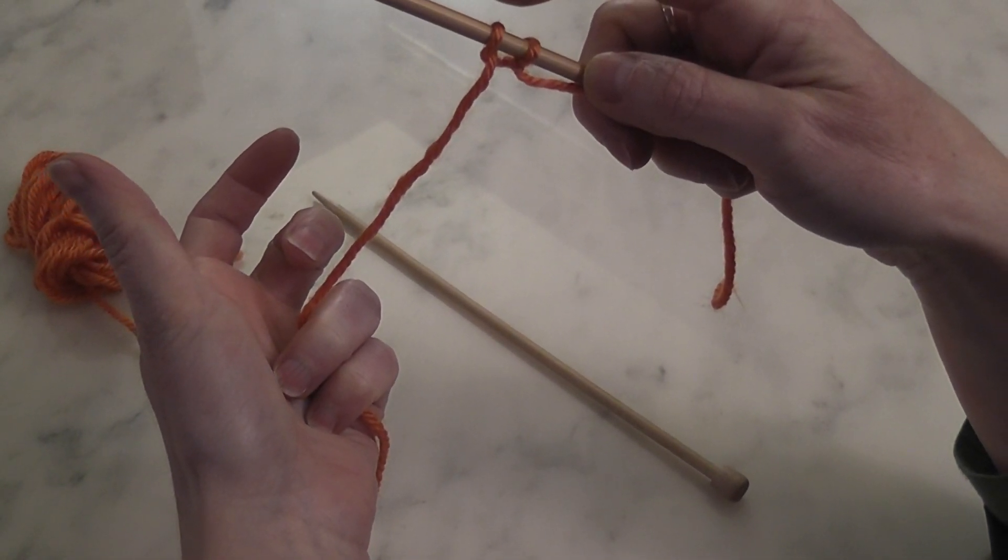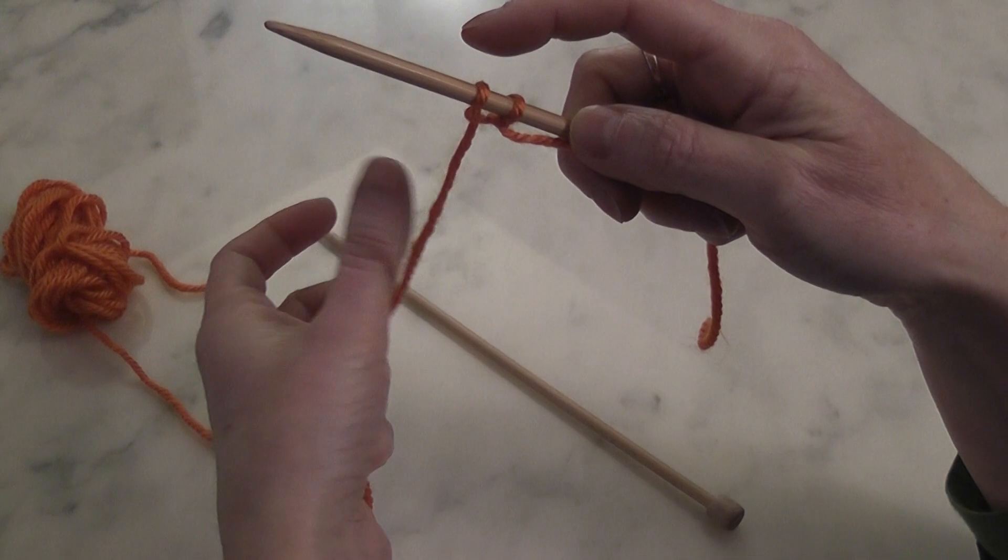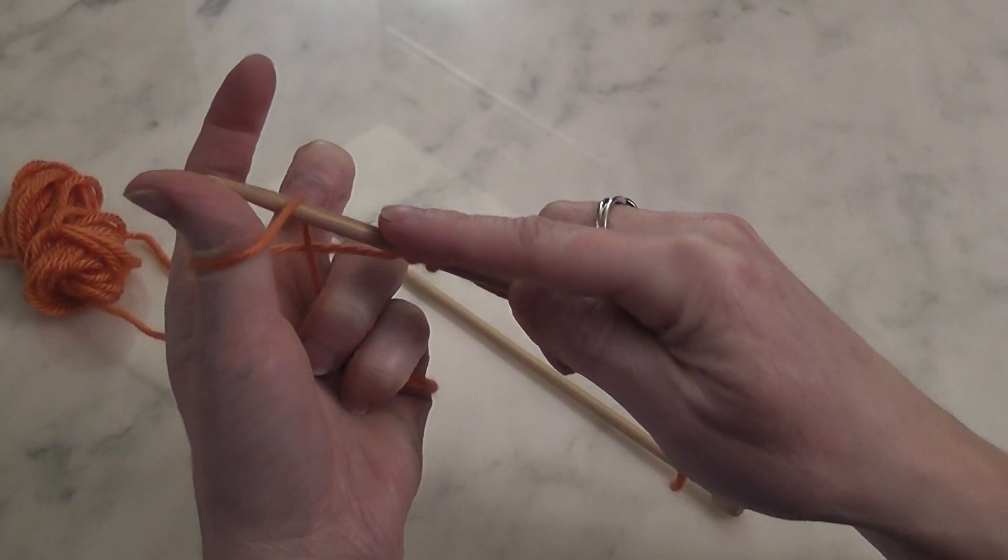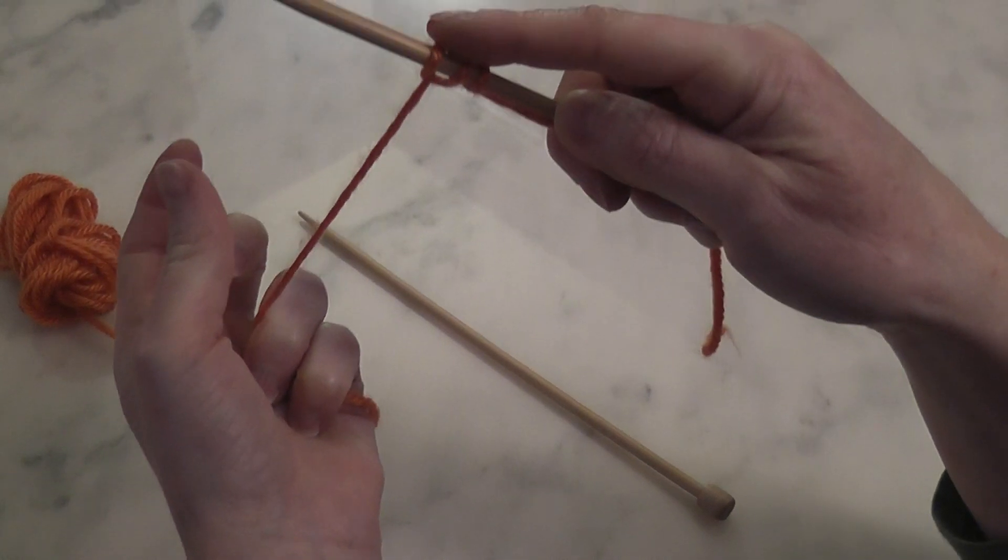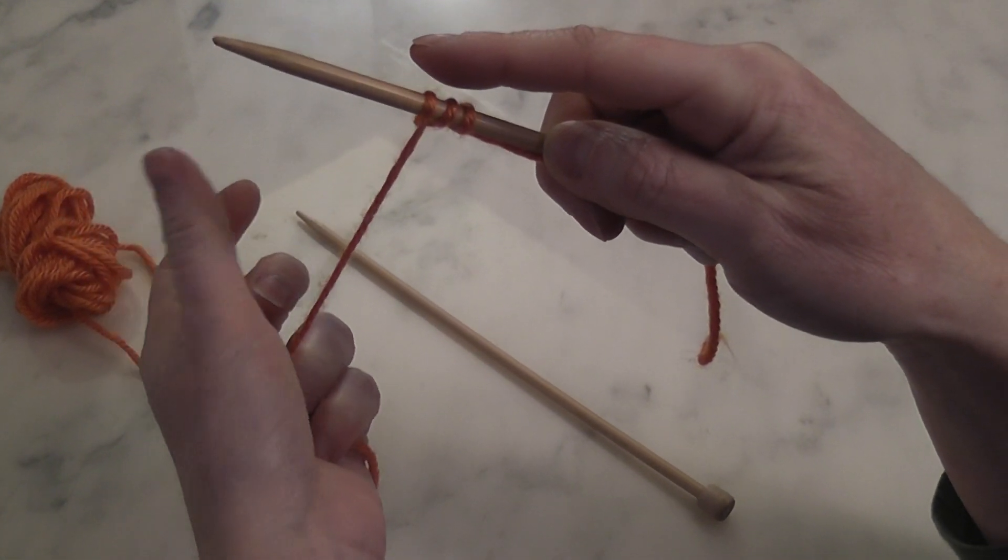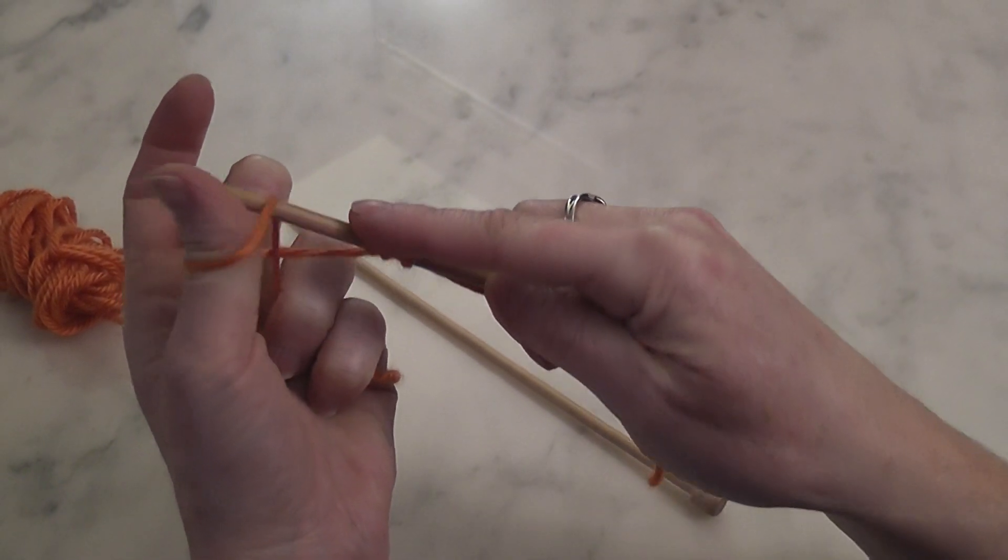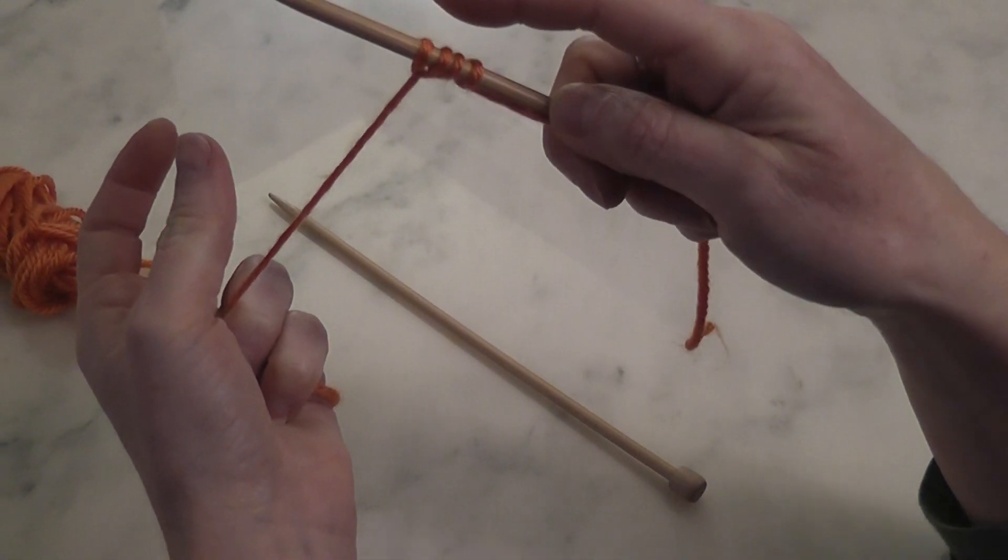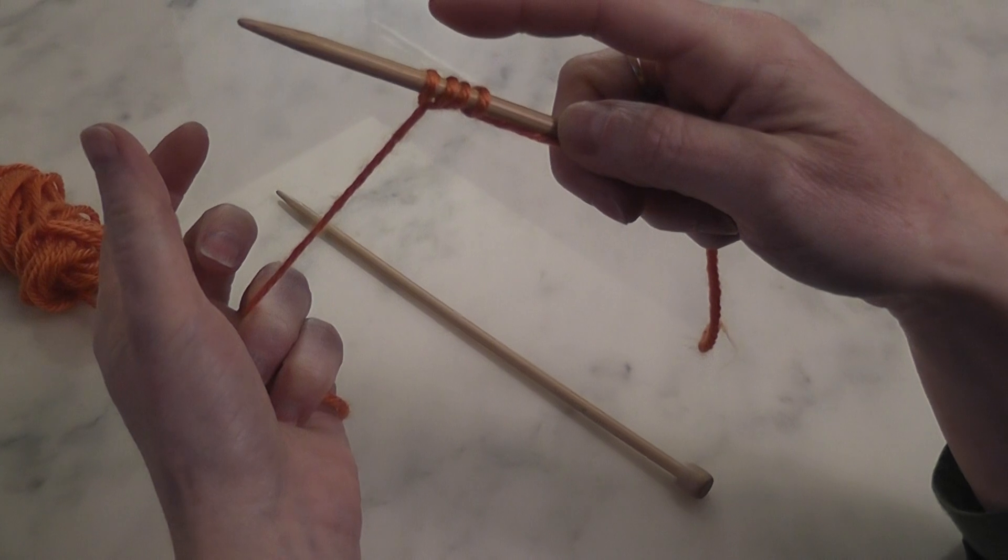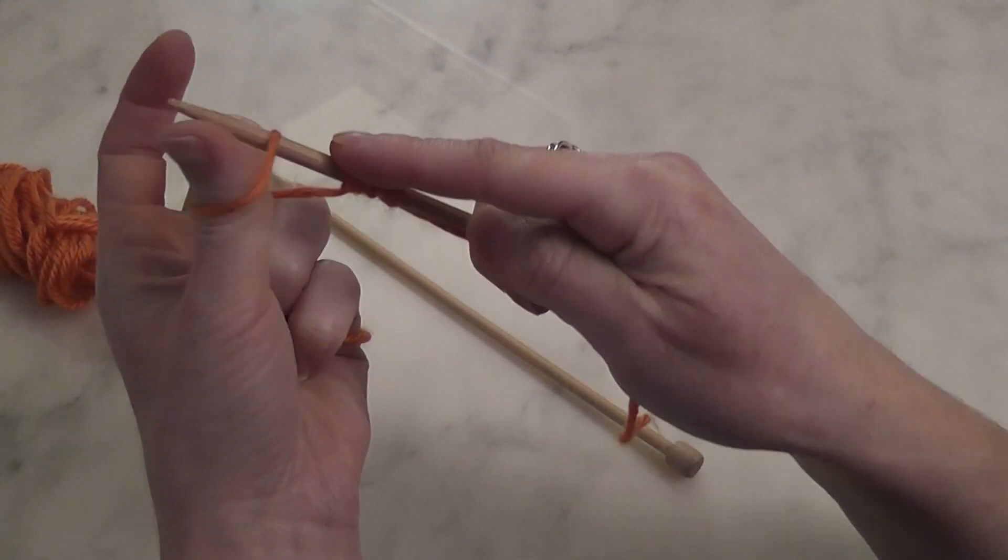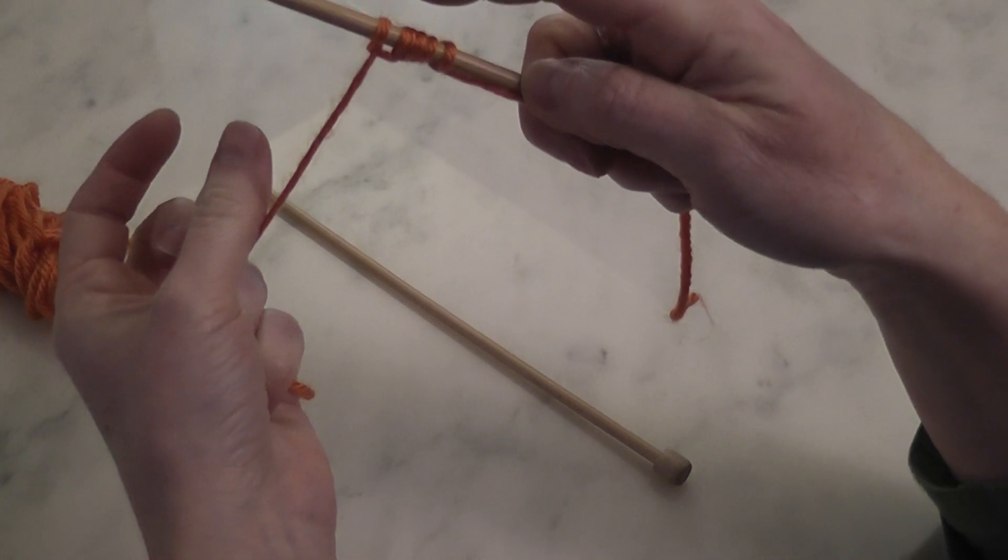So again, your pinky and your ring finger are holding the yarn. Your thumb comes behind the yarn. Your needle goes under the yarn, pulling up that loop and onto the needle. Thumb behind the yarn, needle under, onto the needle. One more time: thumb behind the yarn, your needle under, creating the next loop on your needle.